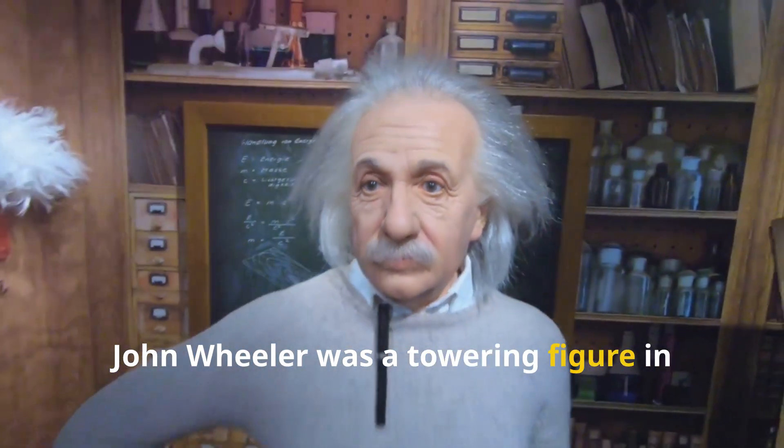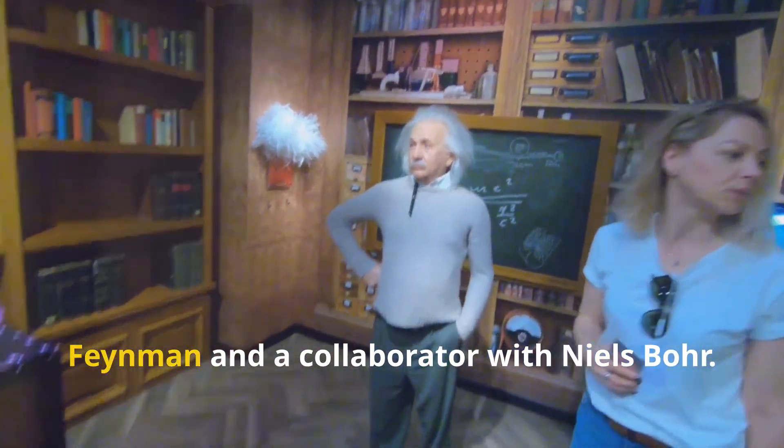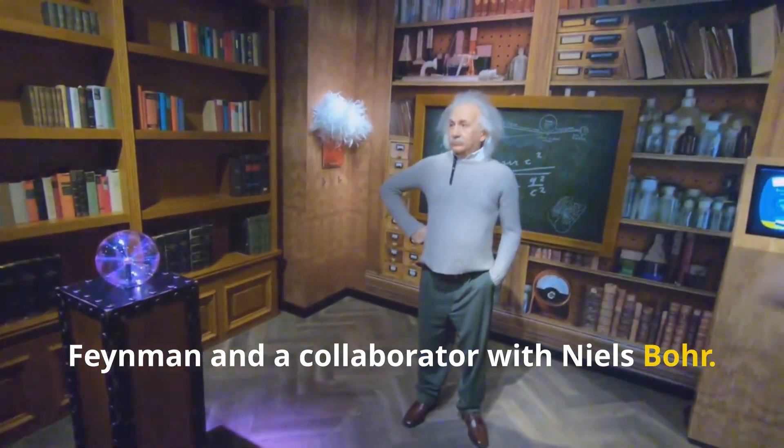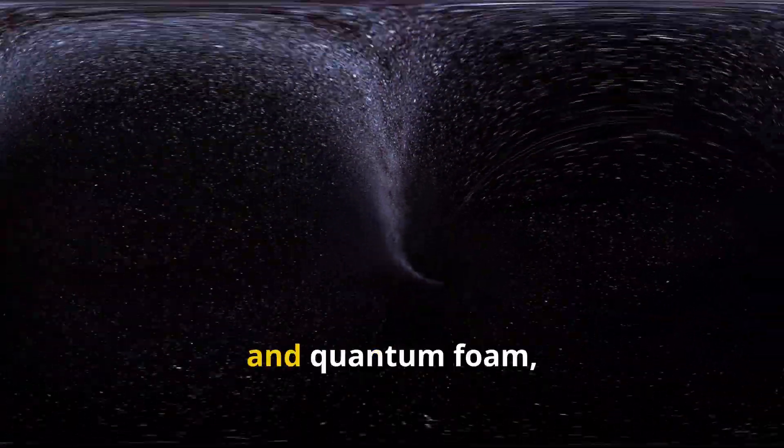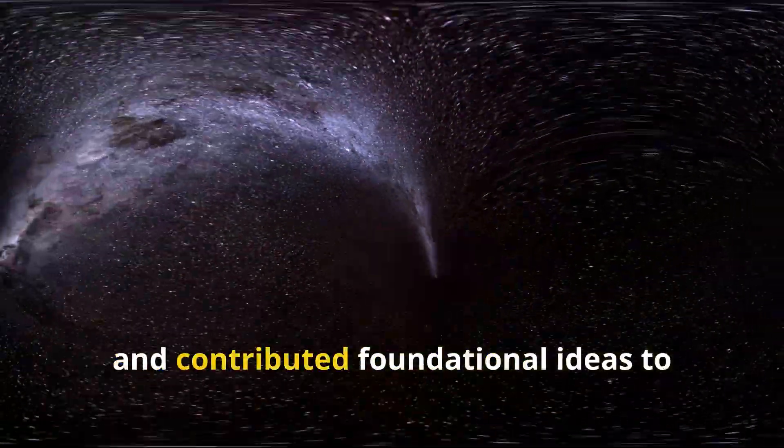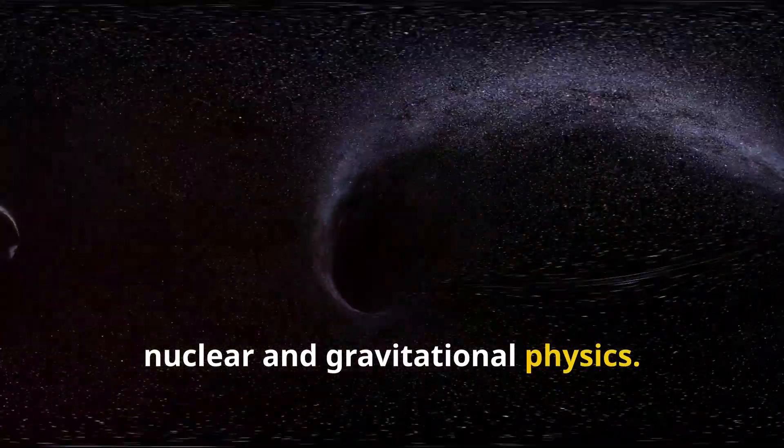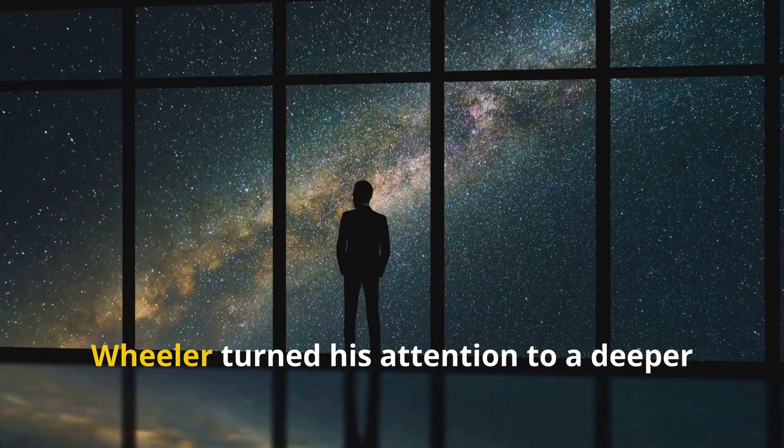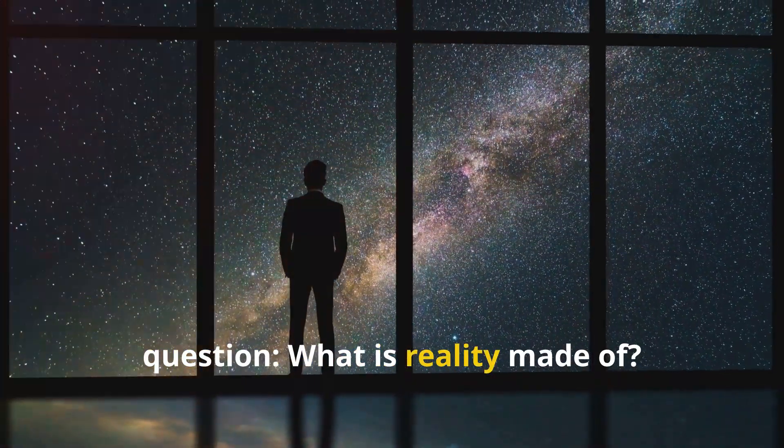John Wheeler was a towering figure in 20th-century physics, a mentor to Richard Feynman and a collaborator with Niels Bohr. He coined terms like black hole, wormhole, and quantum foam, and contributed foundational ideas to nuclear and gravitational physics. But near the end of his life, Wheeler turned his attention to a deeper question. What is reality made of?